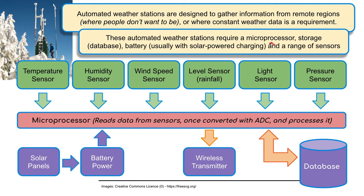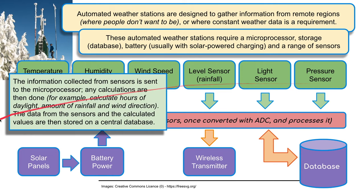These automated weather stations require a microprocessor, storage, a database, a battery — usually with a solar-powered charger — and a range of sensors. The information collected from each of these sensors is sent to the microprocessor. Any calculations are then done — for example, calculating the hours of daylight, the amount of rainfall, and the wind direction. The data from the sensors is calculated and the values are stored on a central database.